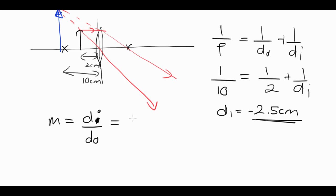Numbers in. Di is 2.5, do is 2. And half of 2.5 is 1.25. So it's 1.25 times bigger, one and a quarter times bigger than the original object, which also makes sense based on our diagram. So that's pretty much it.